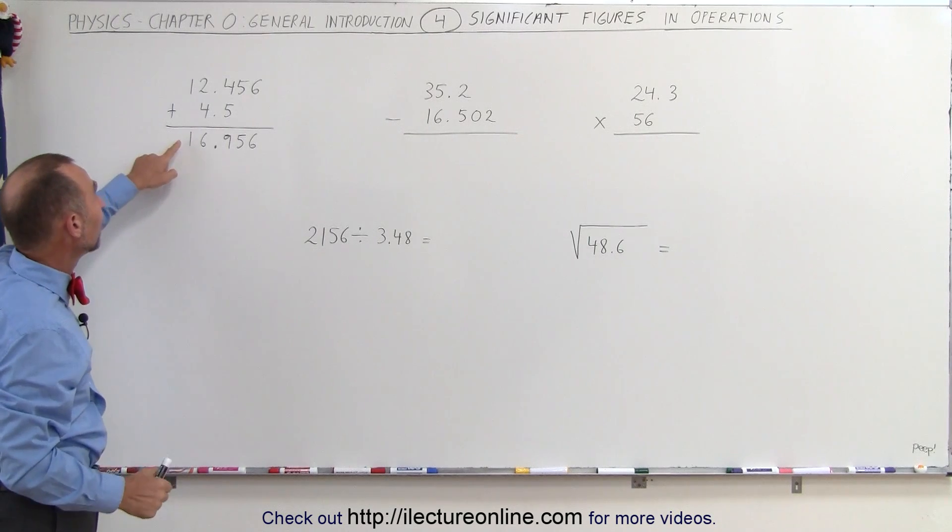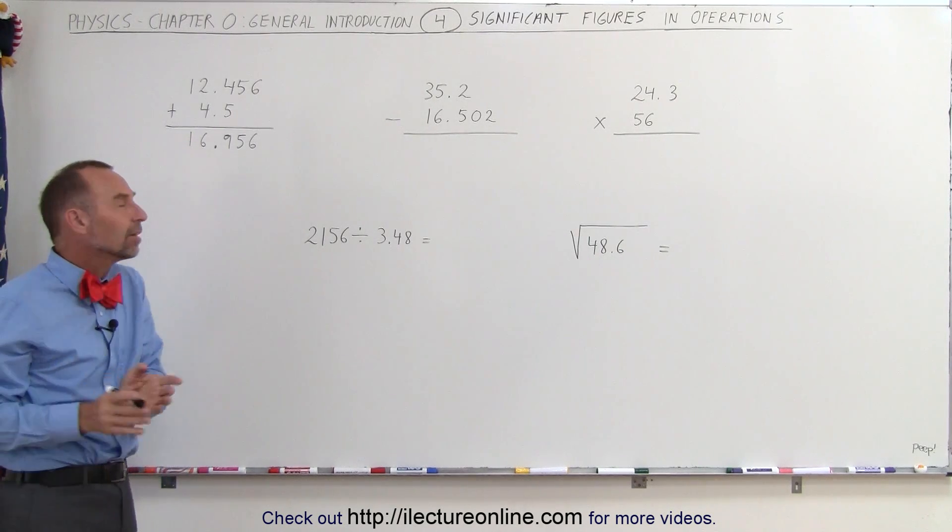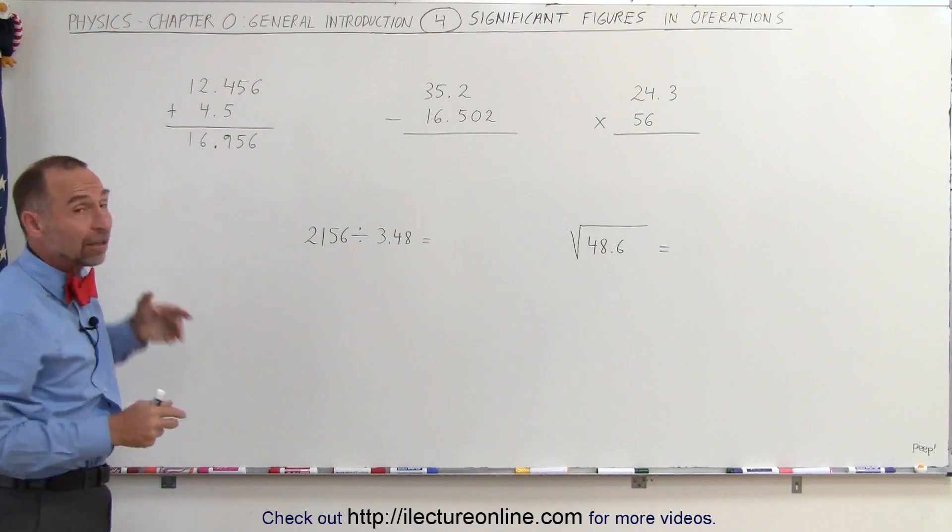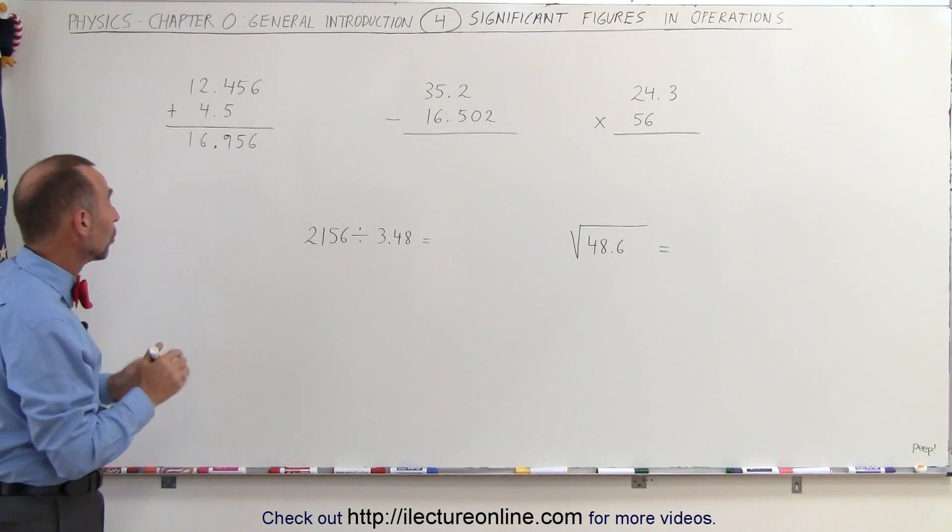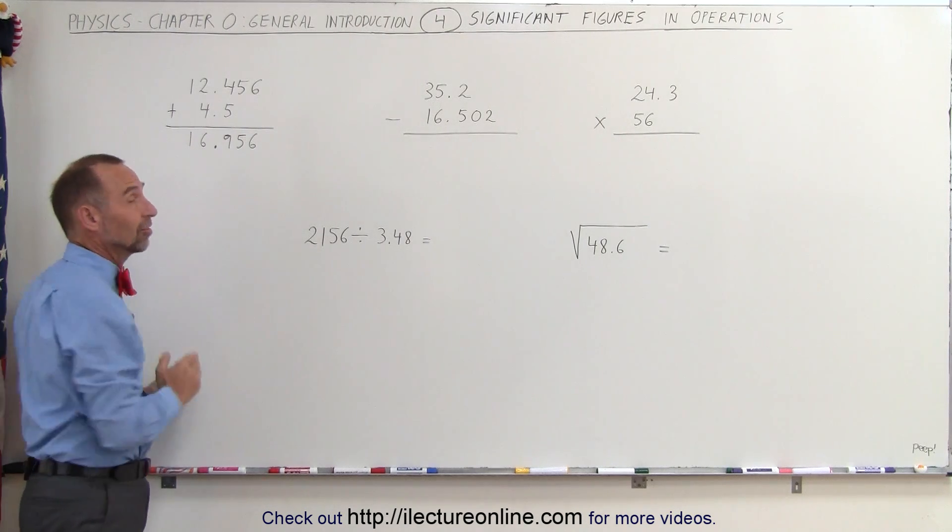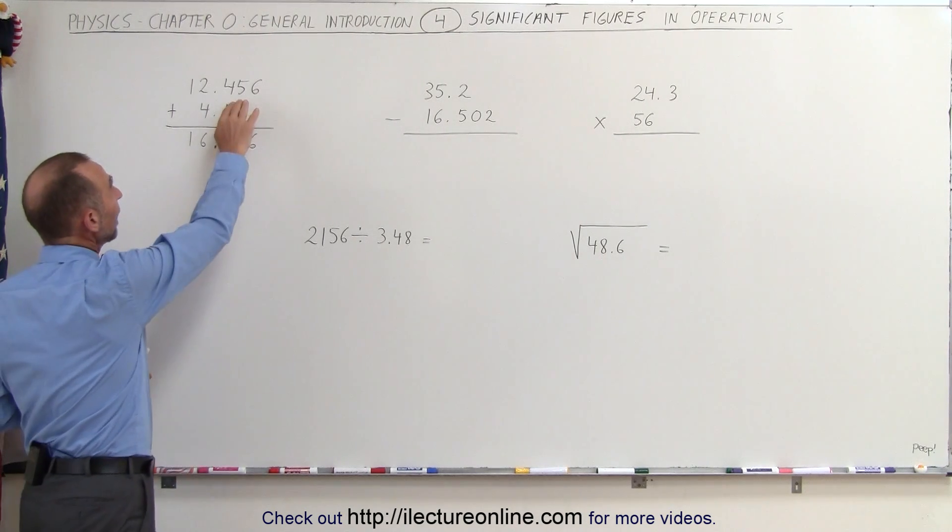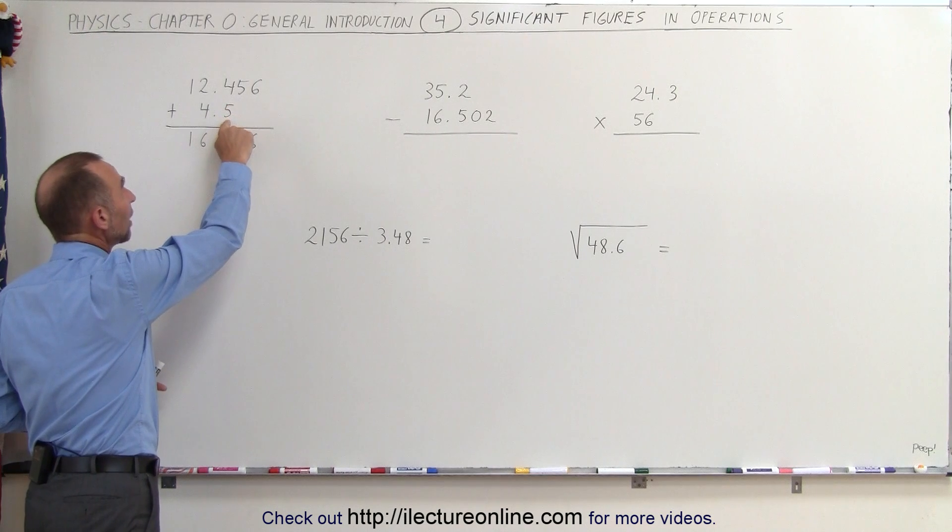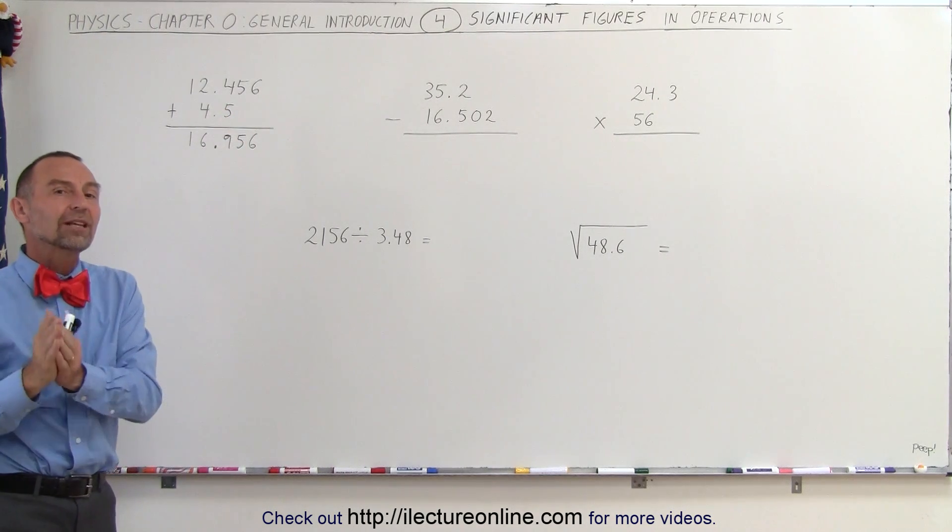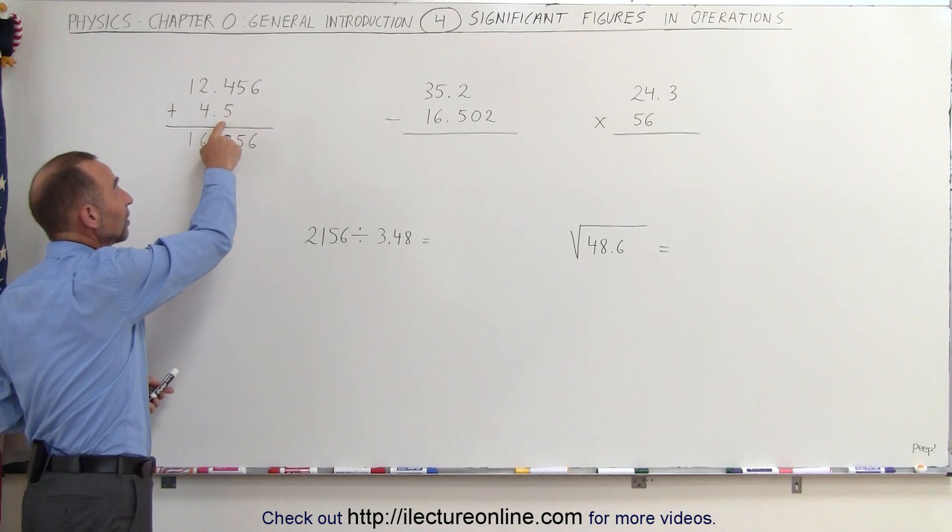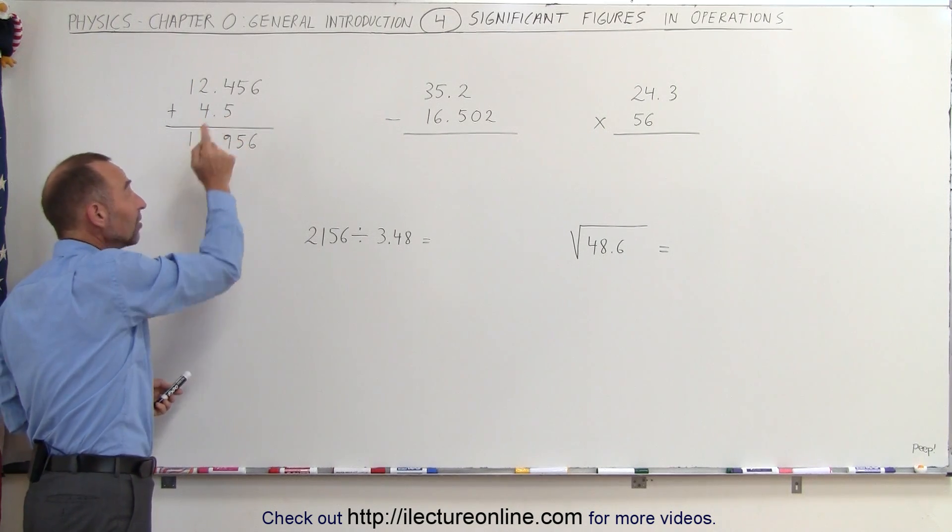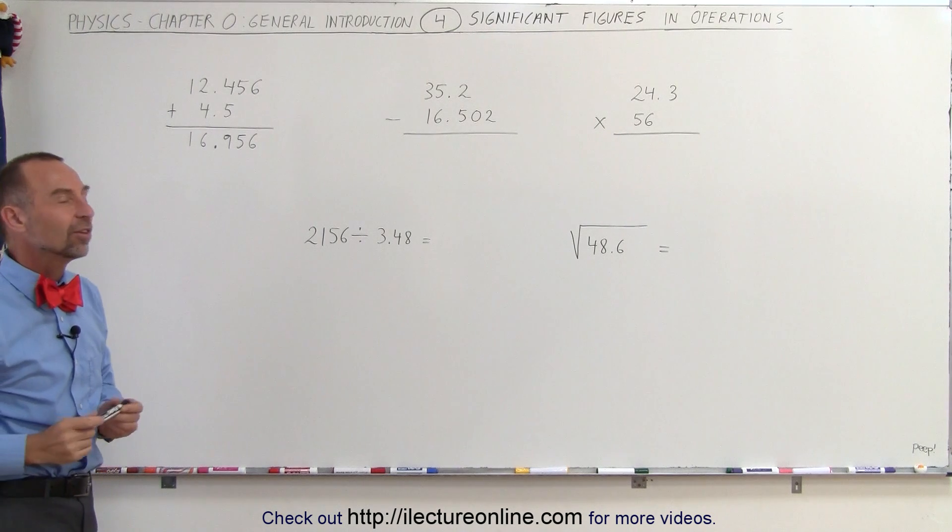So at first it would appear that if we add those two numbers together, our answer will have five significant figures. Then you may say, well wait a minute, since this one only has two, should the answer only have two significant figures? Well, with addition that's not the rule. The rule is you look for the number of decimal places each number has. This number has three decimal places, this number has one decimal place, the answer should have the least number of decimal places.